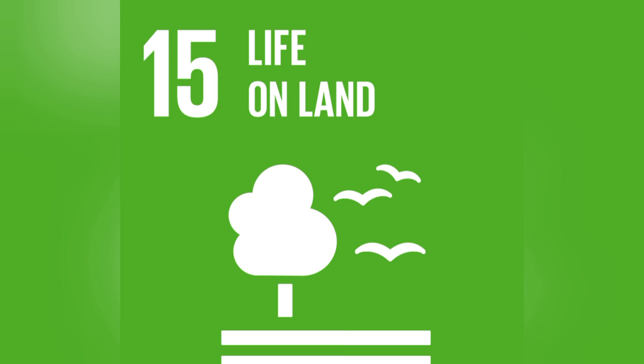Goal number 15, life on land. Outcome target: conserve and restore terrestrial and freshwater ecosystems, end deforestation and desertification, restore degraded land, ensure conservation of mountain ecosystems, protect biodiversity and natural habitats, eliminate trafficking of protected species. Targeted implementation: increase financial resources to conserve and sustainably use ecosystems and biodiversity.